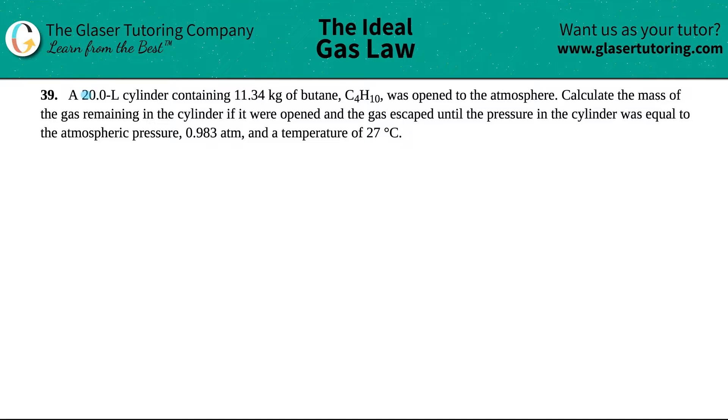Number 39. A 20.0 liter cylinder containing 11.34 kilograms of butane, which is C4H10, was opened to the atmosphere. Calculate the mass of the gas remaining in the cylinder if it were opened and the gas escaped until the pressure in the cylinder was equal to the atmospheric pressure, which is 0.983 atm, and a temperature of 27 degrees Celsius.